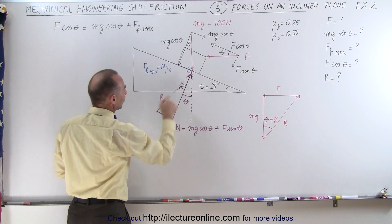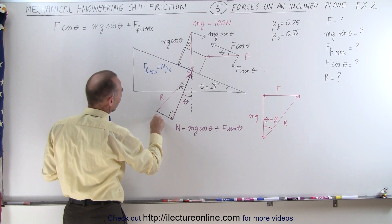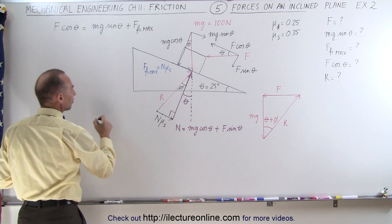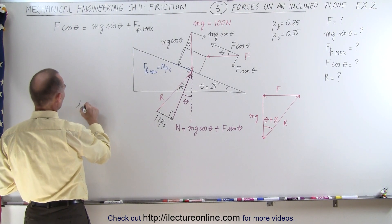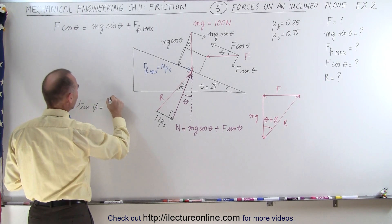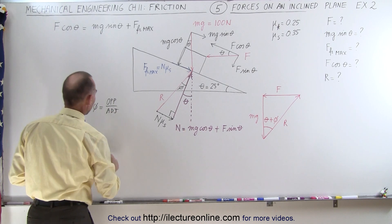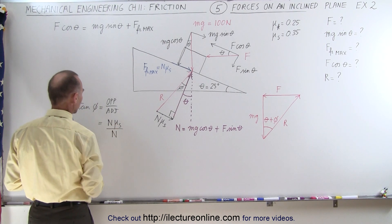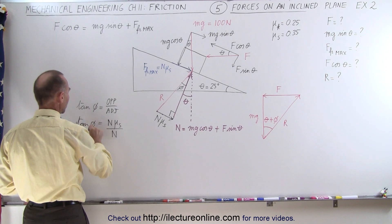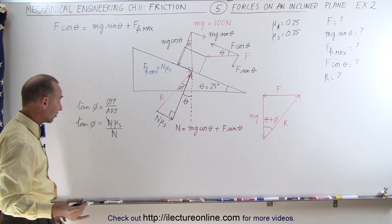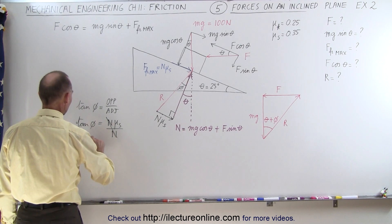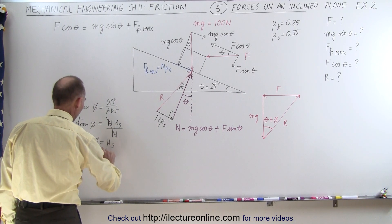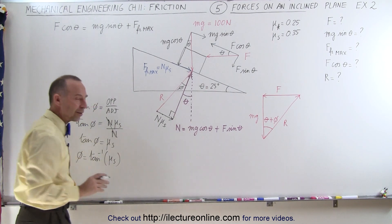Now I can figure out this angle phi. If this side is equal to the friction force, then it equals the normal force times the static coefficient of friction. Because this is a right triangle, the tangent of phi equals the opposite side divided by the adjacent side — that's the normal force times mu sub s divided by the normal force. The normal forces cancel out, which means the tangent of phi equals the static coefficient of friction, and phi equals the arc tangent of mu sub s.